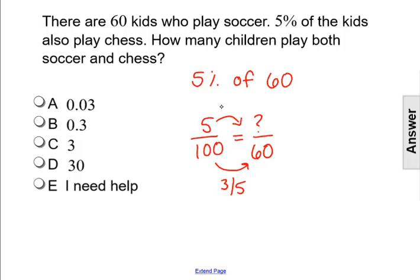We can multiply 5 by three-fifths. So 5 times three-fifths is 15 over 5, which is 3. That something above 60 is 3. So how many children play both soccer and chess?